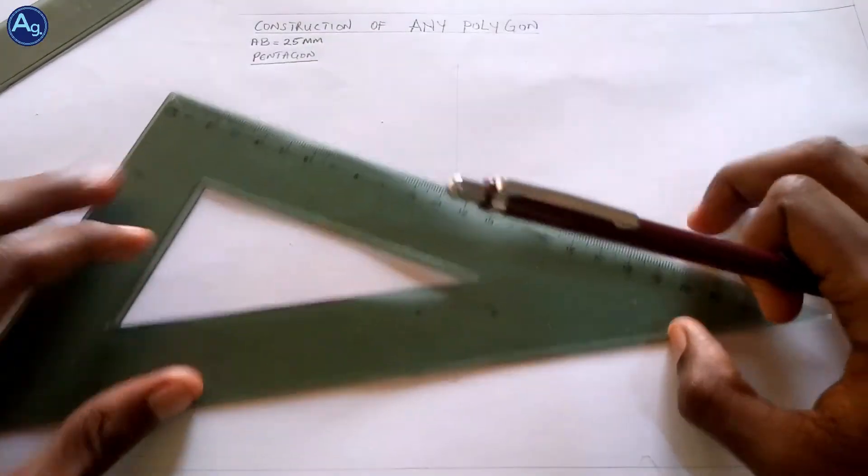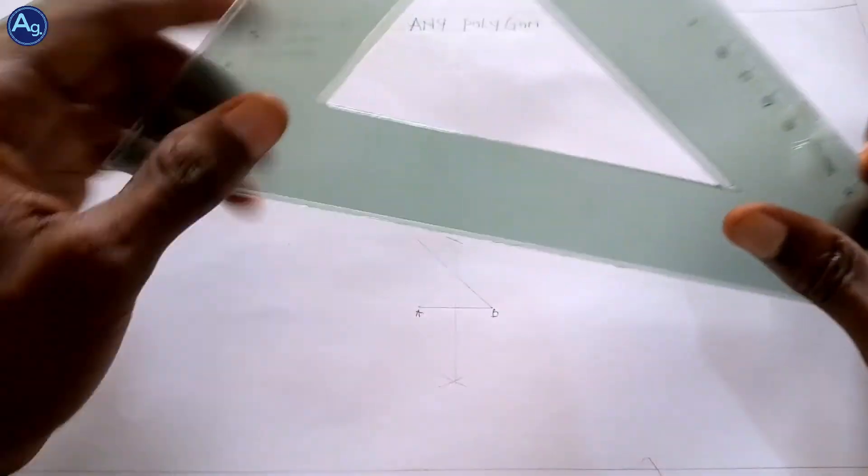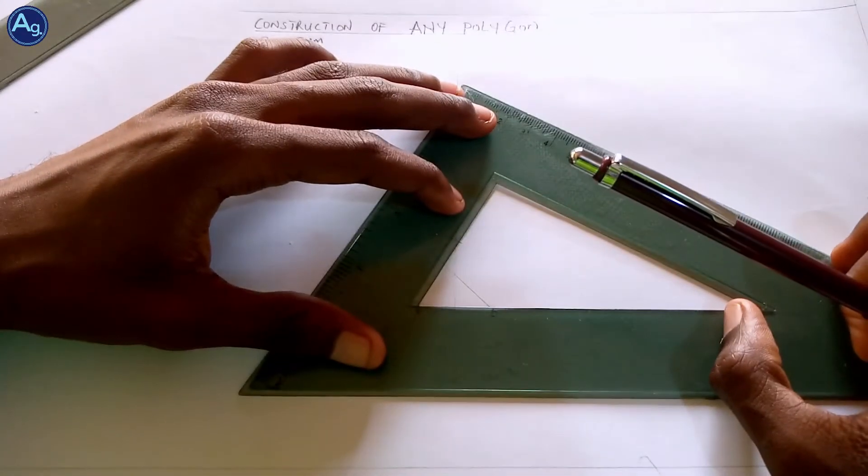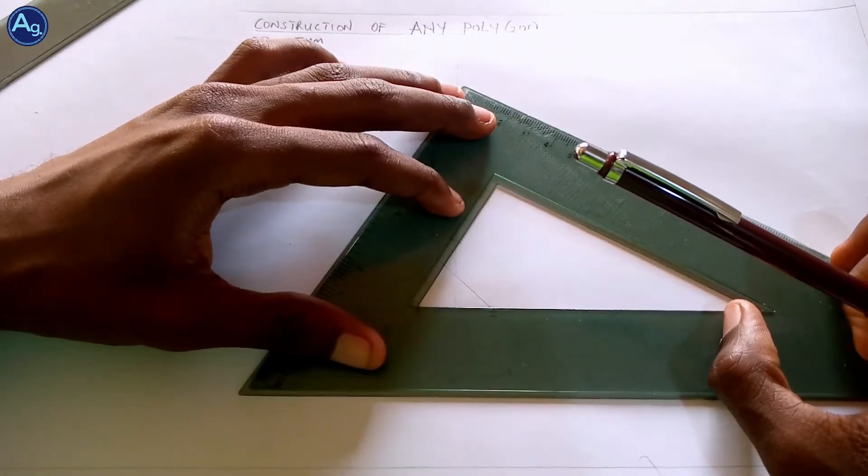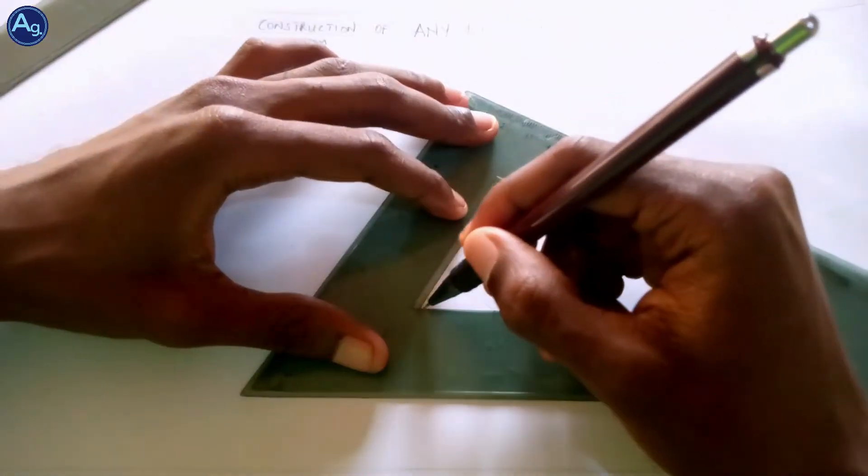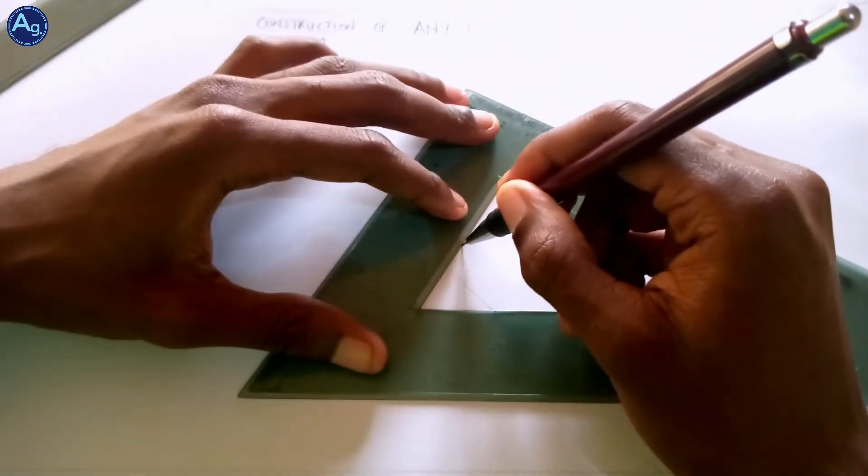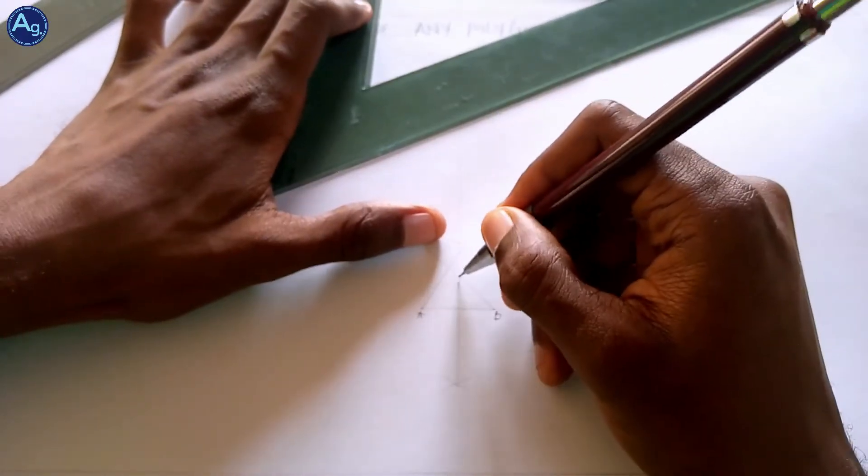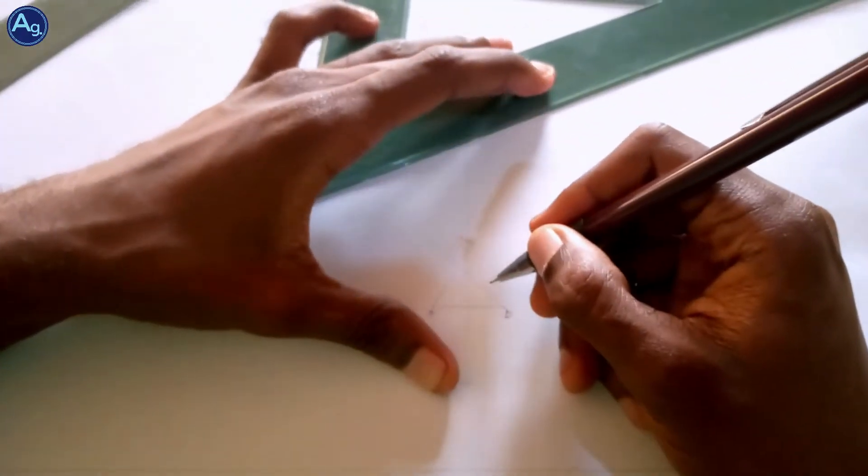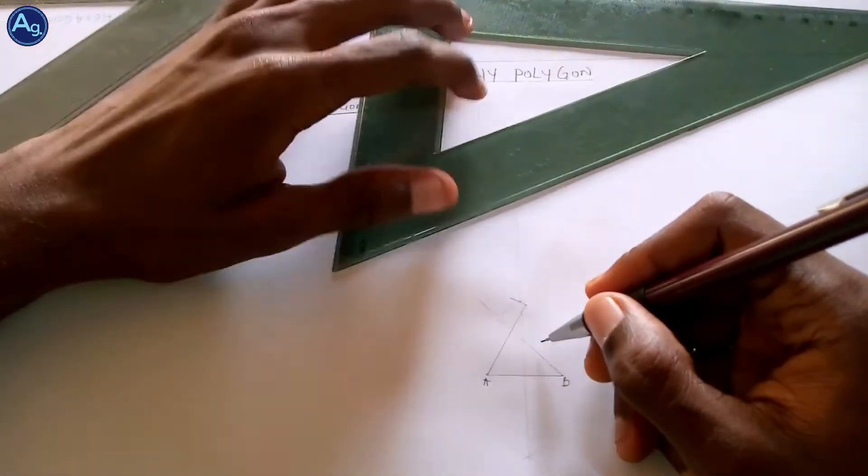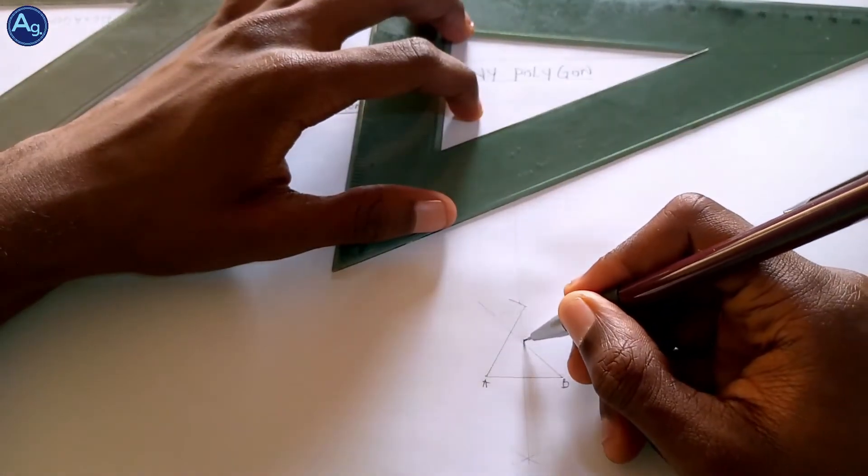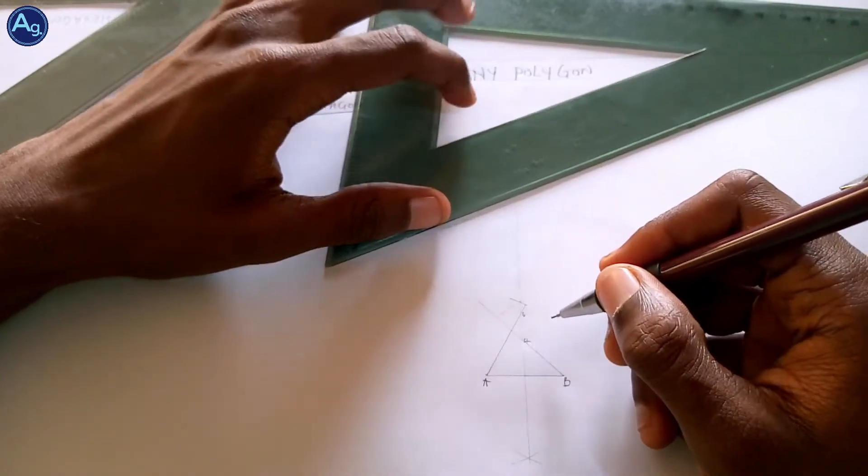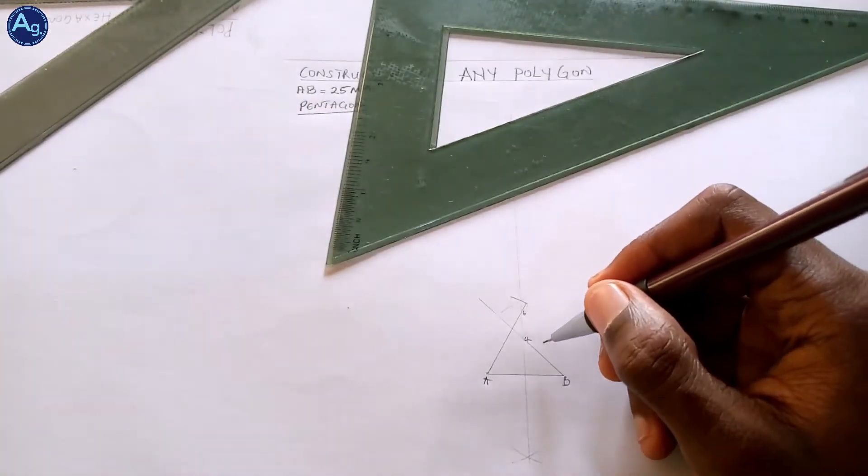And now your 60 degrees, remember this is your 60, this is your 30, so your 60 degrees to cut the line as well. So we're going to label these points 4 and 6.